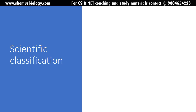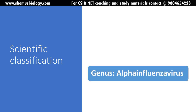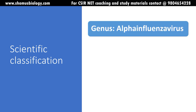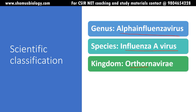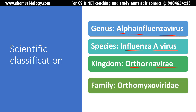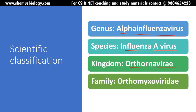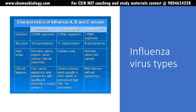Looking at the scientific classification: the genus is Alphainfluenzavirus, the species is influenza A virus, the kingdom is Orthornavirae, and the family is Orthomyxoviridae.